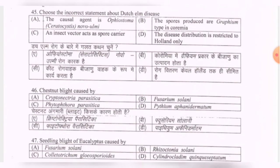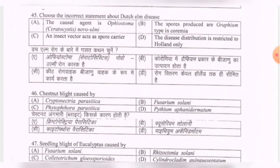Next question: choose the incorrect statement about Dutch elm disease — options are the causal agent is Ophiostoma novo-ulmi; spores produced are graphium type in coremia; an insect vector acts as a spore carrier; its distribution is restricted to Europe only. The correct option is D — its distribution is restricted to Europe only.